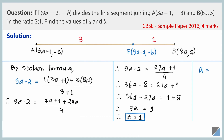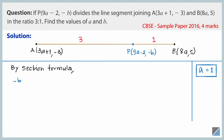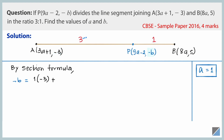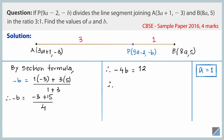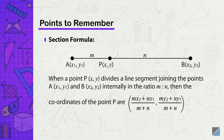Now let's use the y-coordinate of point P. We get −b equals 1 multiplied by the y-coordinate of point A, which is −3, plus 3 multiplied by the y-coordinate of point B, which is 5, all divided by 1 plus 3. That is: −b = (−3 + 15) / 4 = 12 / 4 = 3. Therefore −4b = 12, so b = 12 / (−4), giving b = −3. So the values are a = 1 and b = −3.